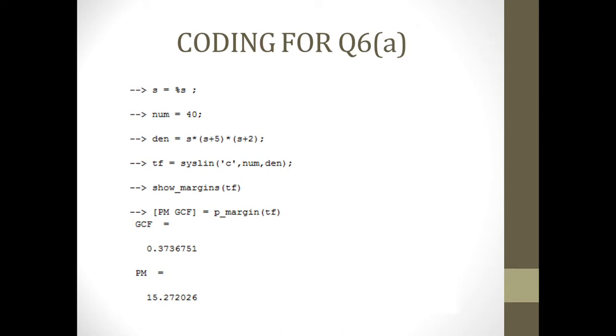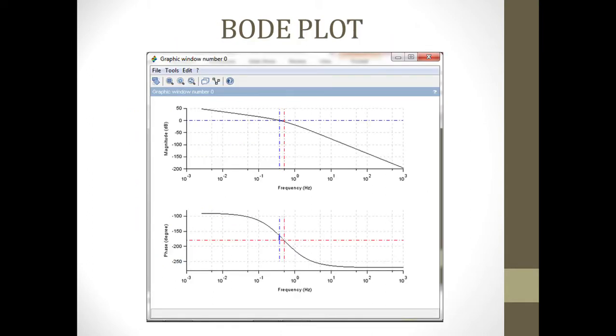And for the Bode plot, it shows the phase margin is 15.272026 for gain crossover frequency is 0.3736751. This is the Bode plot which above shows the magnitude and below shows the phase margin.